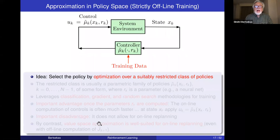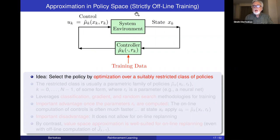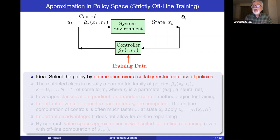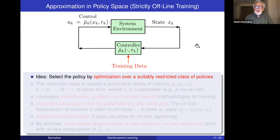There is also approximation in policy space — obtaining a policy that is approximately optimal. This is strictly offline. It's not a good idea to use approximation in policy space only in online play. However, you can use it to provide data that feeds into approximation in value space, used as a component of that. The basic formulation parametrizes policies with a parameter vector r_k, which for finite horizon depends on the stage, and for infinite horizon there is one set of parameters for the stationary policy mu.